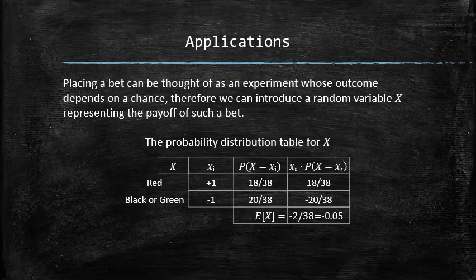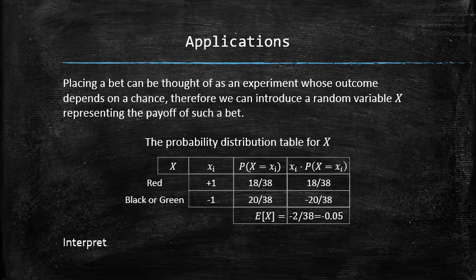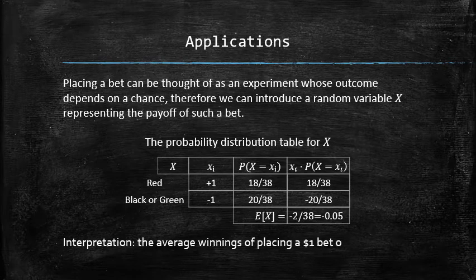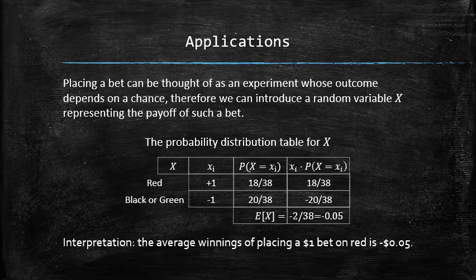So what does this number mean in the context of the problem? We interpret the mean as the average winnings of placing a $1 bet on red. In other words, on average, you would lose 5 cents per game. So if you play 100 games, you will lose 5 dollars.